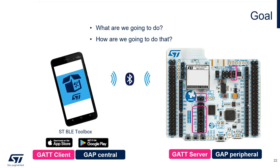The Nucleo is also a server, meaning it implements a BLE service and characteristic. On the other hand, the smartphone is a GAP client, which performs service and characteristic discovery and is able to perform read, write, and notify operations on these characteristics.